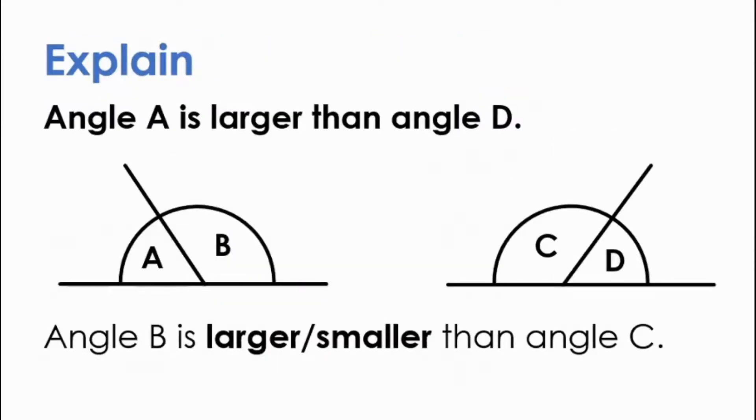There's a huge range of different types of tasks that will get children talking and exploring. Like this one from the angle section. We know that angle A is larger than angle D. But how does that help us to order angles B and C?